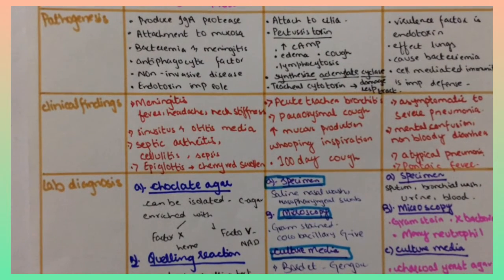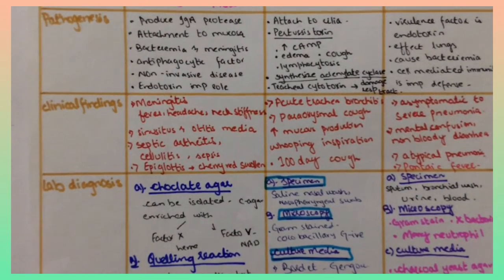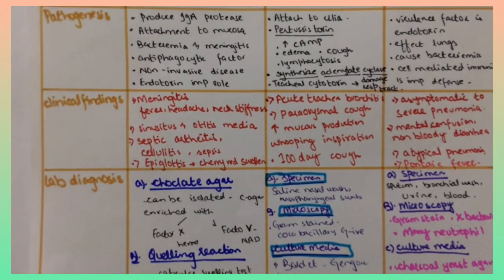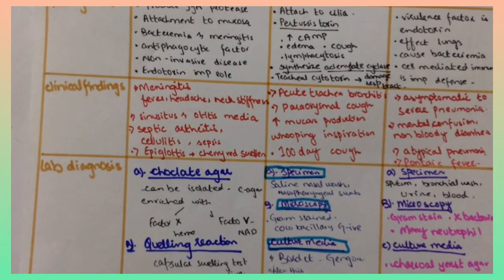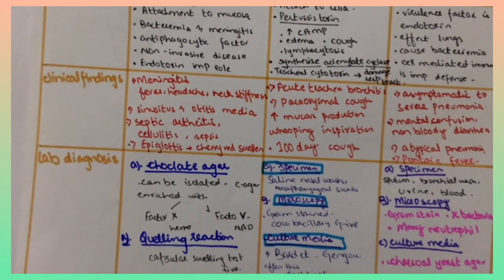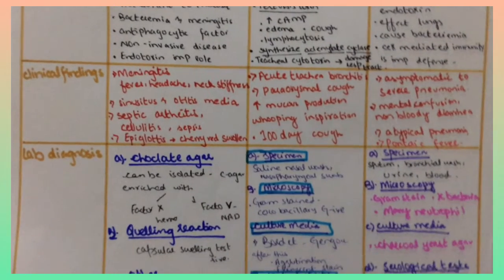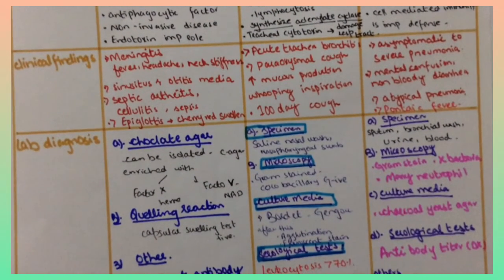Legionella is asymptomatic to severe pneumonia, mental confusion, non-bloody diarrhea, atypical pneumonia and Pontiac fever is also seen that includes mild systemic disease with flu-like symptoms that does not result in pneumonia.